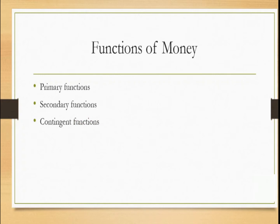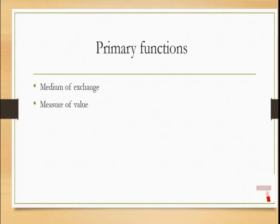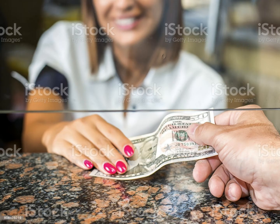In functions of money there are mainly three types of functions. First is the primary function, second is the secondary function, and third is the contingent function. We are going to discuss one by one with practical examples. Primary functions include two functions: the medium of exchange and the measurement of value.